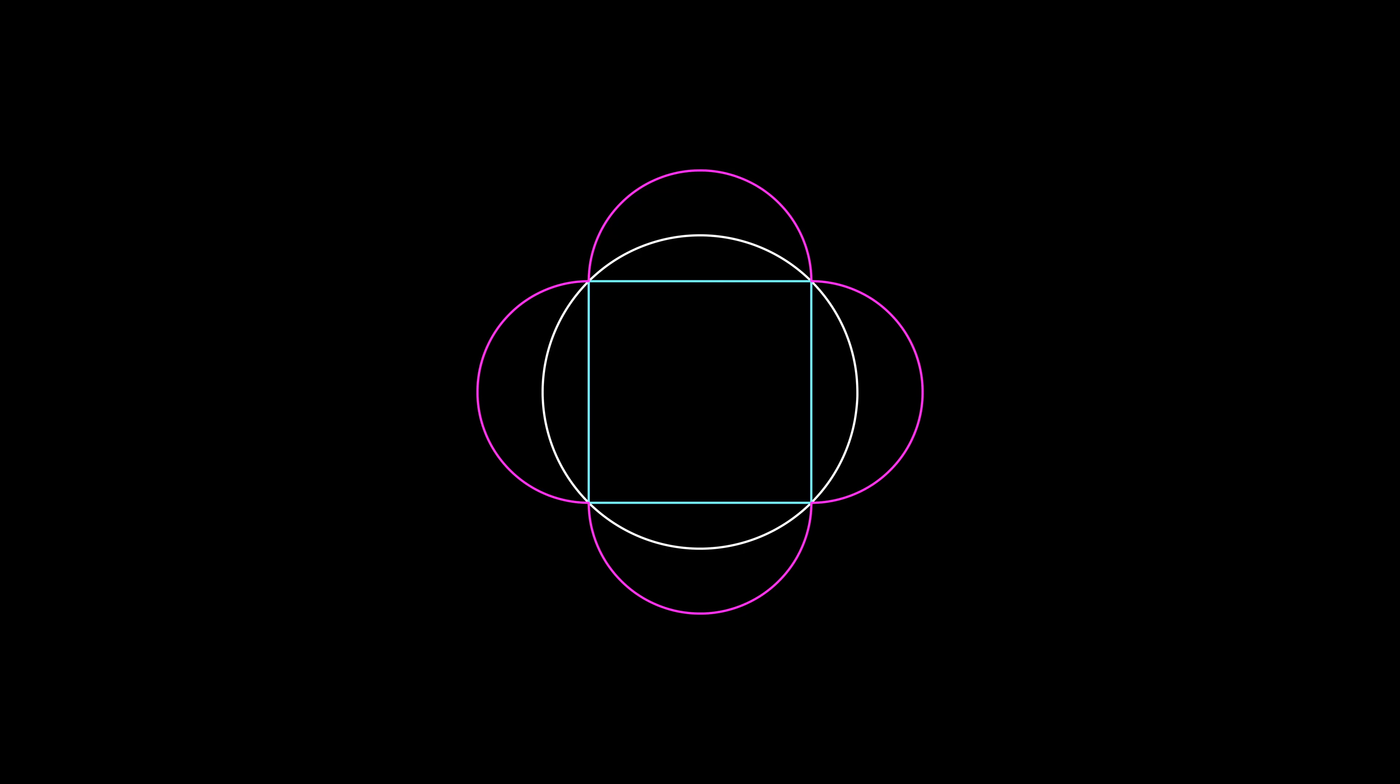Now consider the area of the inside square and compare that to the area of the four lunes created by the four semicircles and the original circle.